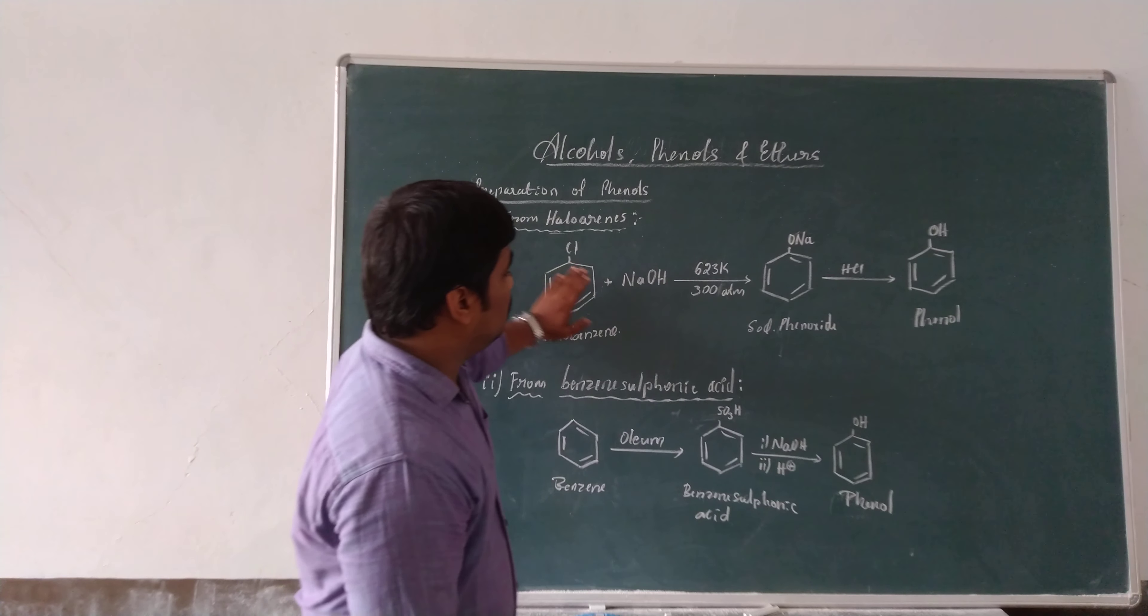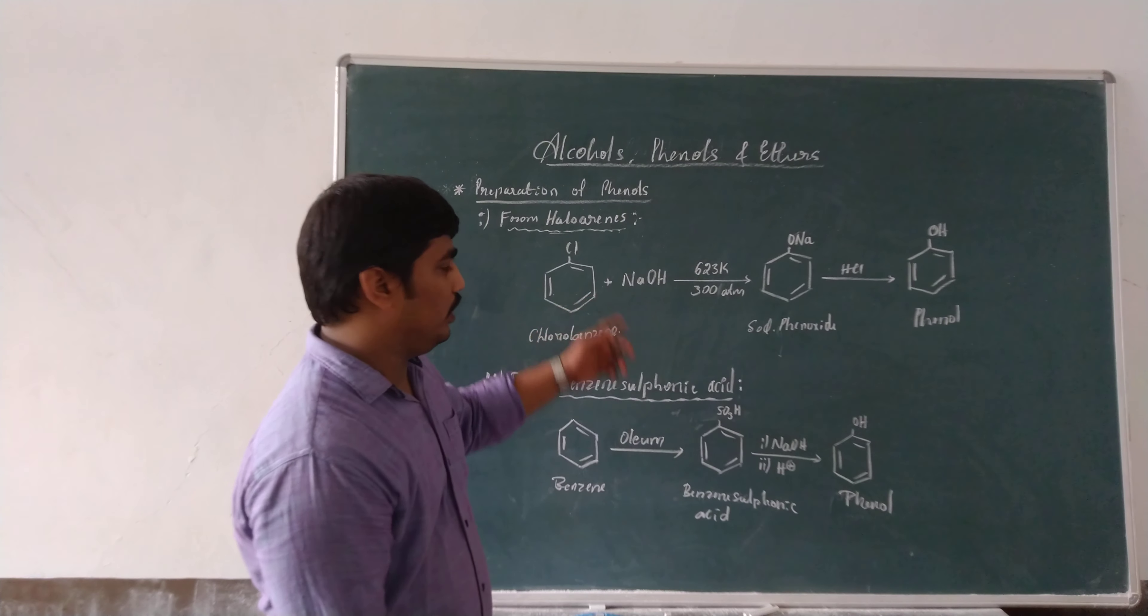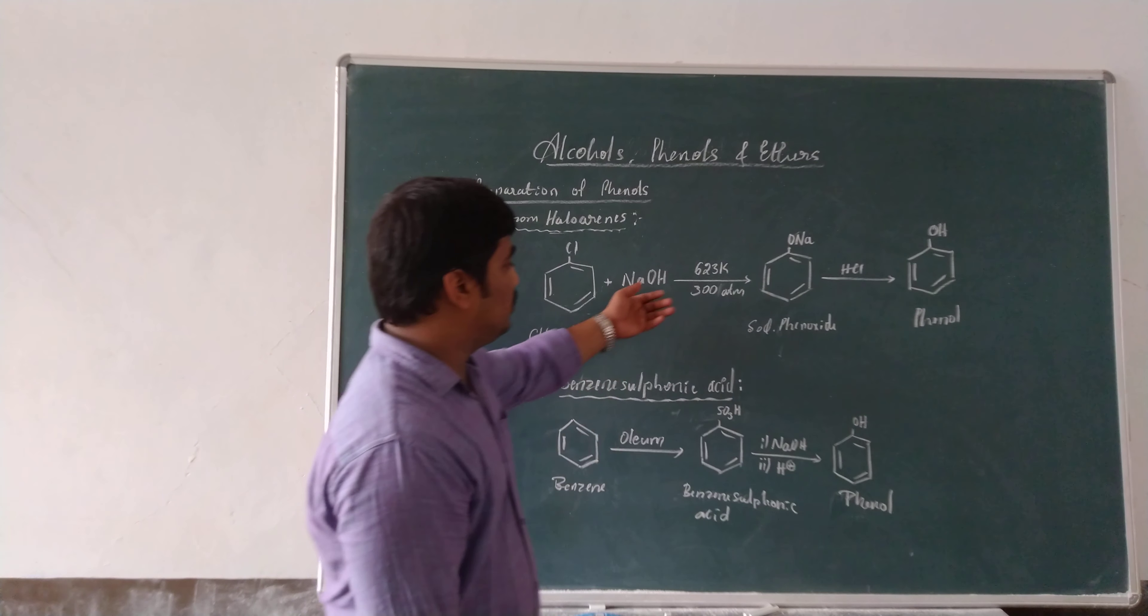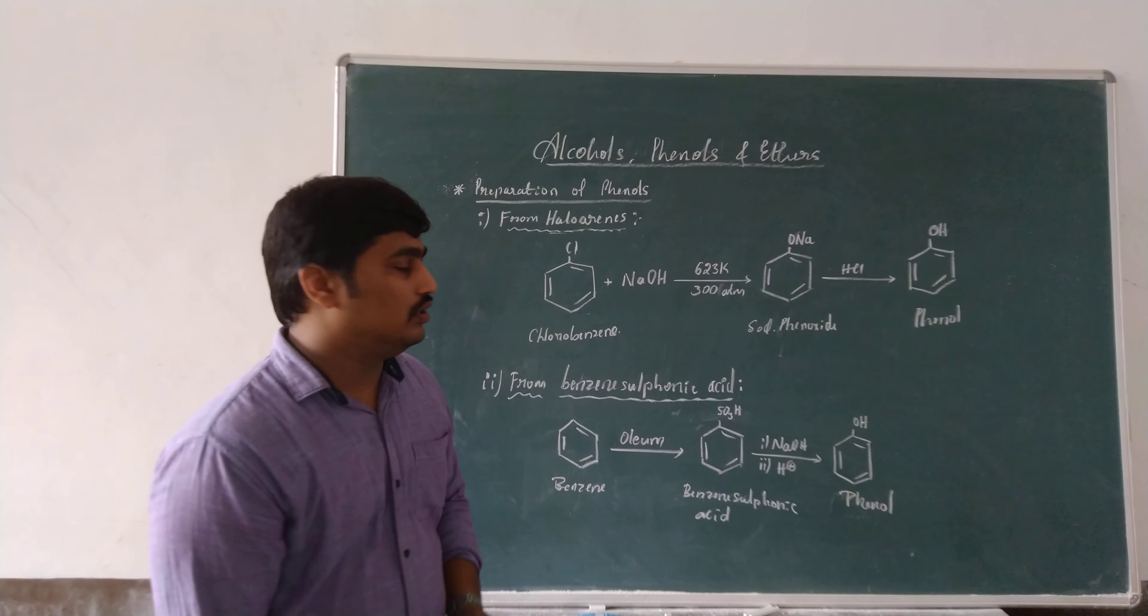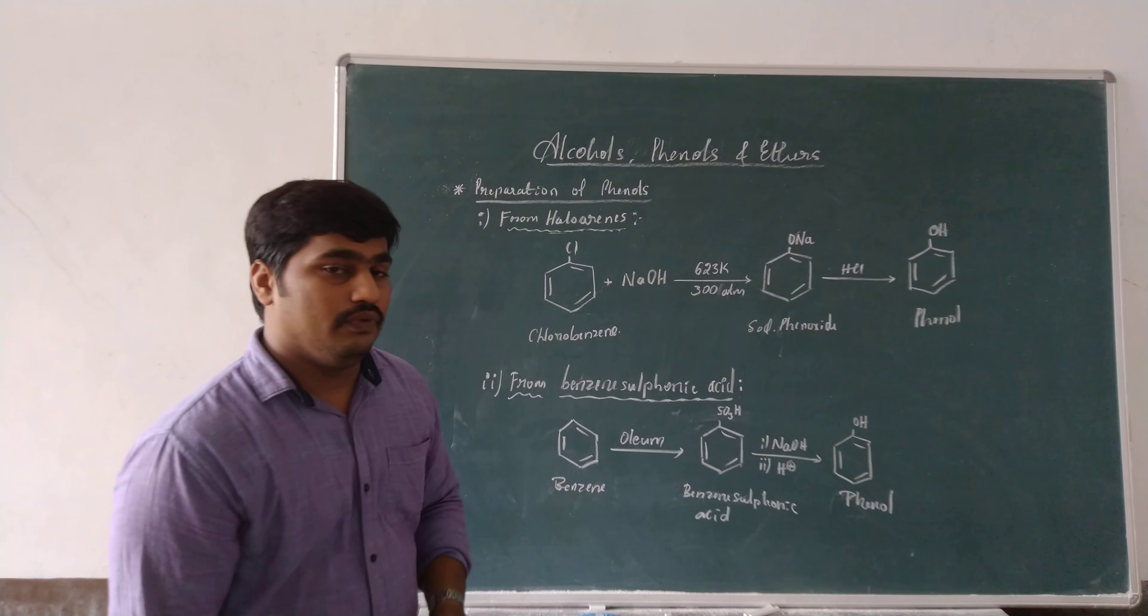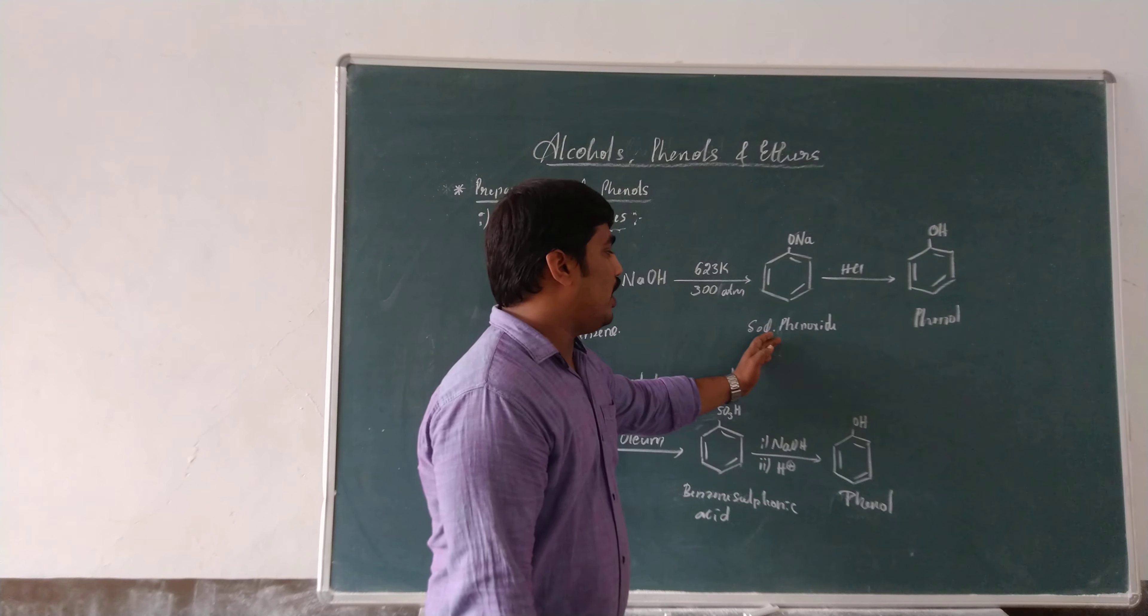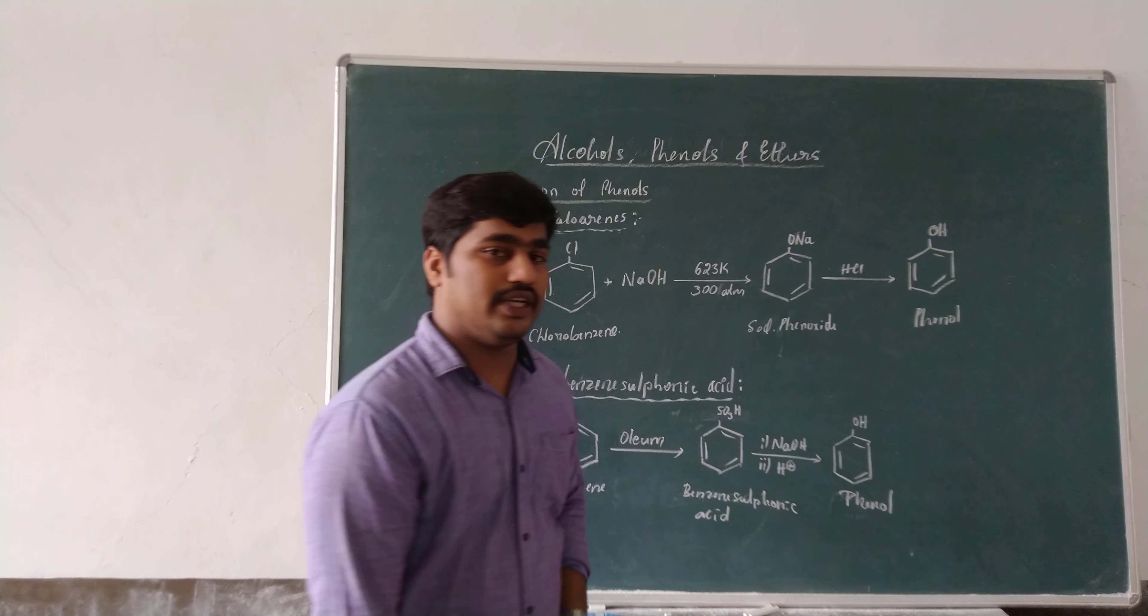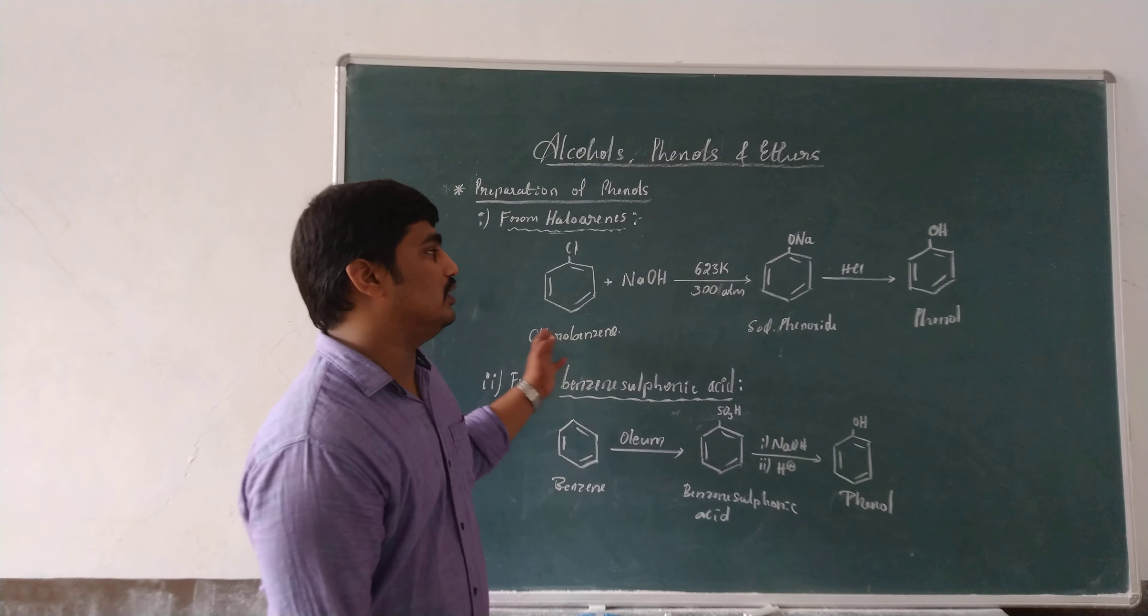Here, the haloarene is made to react with sodium hydroxide. Any haloarene is made to react with sodium hydroxide, heated around 623 Kelvin and 300 atmosphere pressure, which gives an intermediate called sodium phenoxide. And when it is acidified with HCl, it gives phenol. This is one method.